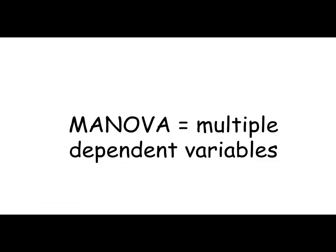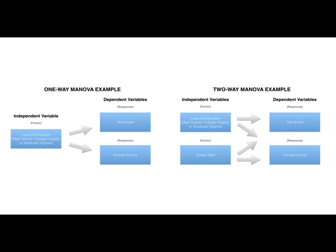A MANOVA is used when we have multiple dependent, or outcome, variables. For example, we might examine the effect of education on test score and annual income. In this case, we would use a MANOVA.